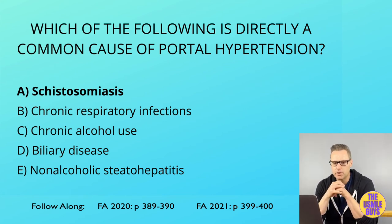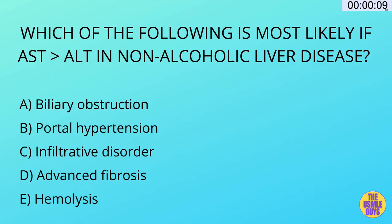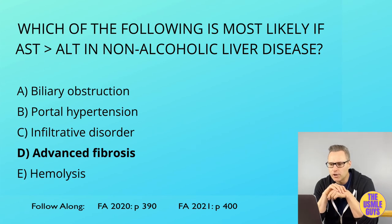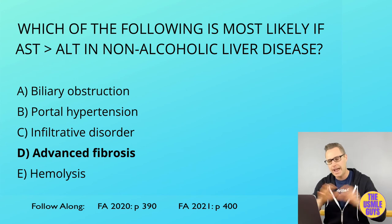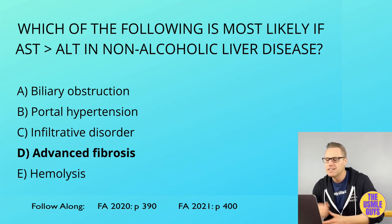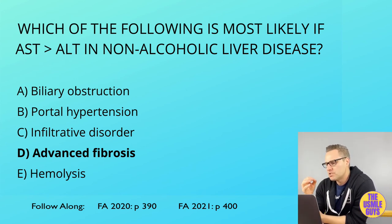Let's do one more question. Go ahead and hit that pause button, figure this one out, and then come on back. The correct answer here is D. One of the easiest ways to recognize what they're trying to identify in a vignette related to liver pathology is to recognize which serum markers and enzymes are altered as a result of a certain problem — we need to know this stuff cold.